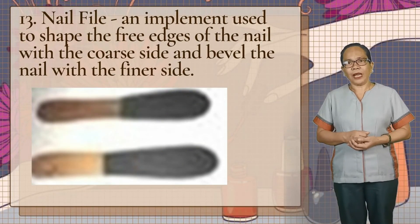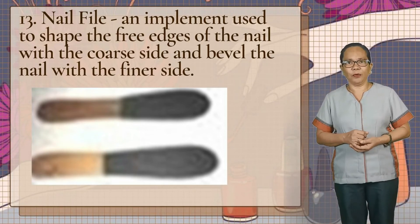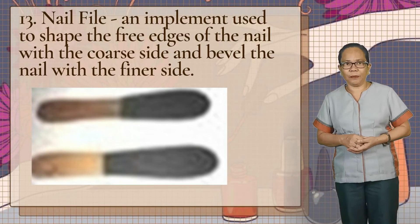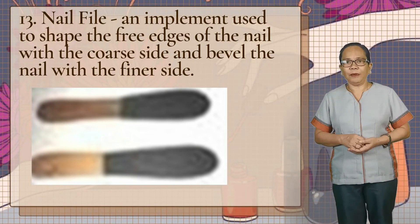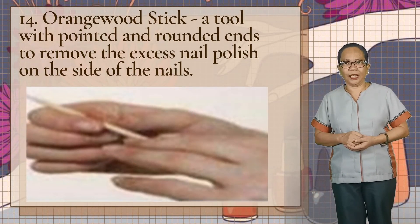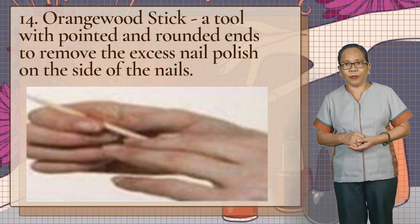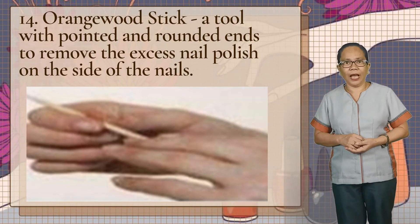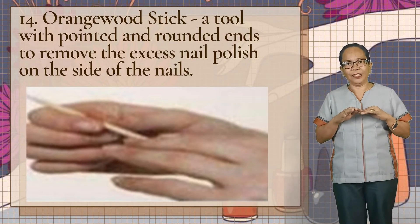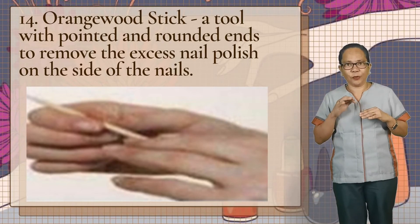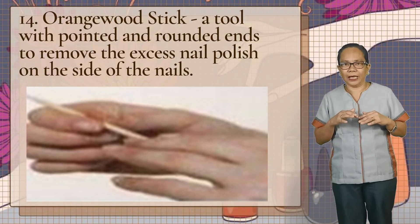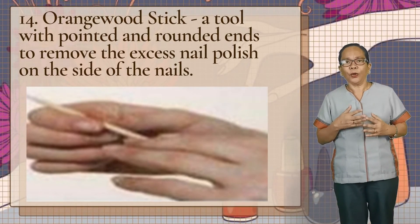Next we have the nail file, an implement used to shape the free edge of the nail with the coarse side and bevel the nail with the finer side. Next we have the orange wood stick, a tool with pointed and rounded ends to remove the excess nail polish on the side of the nail — ito ay ginagamit kapag tapos na ang pagapply ng nail polish, pag may excess or cutics yun ang pinangtatanggal doon sa gilid ng ating kuko.